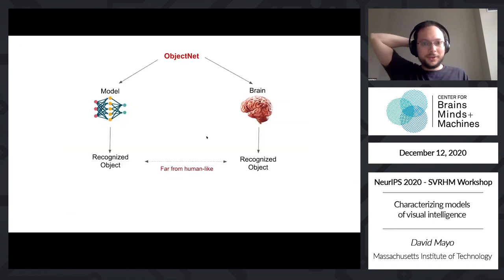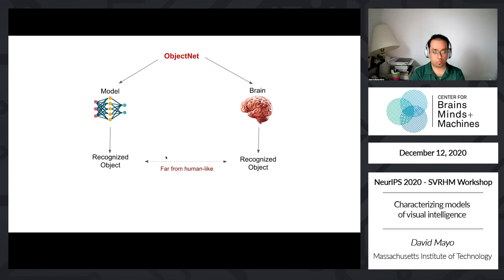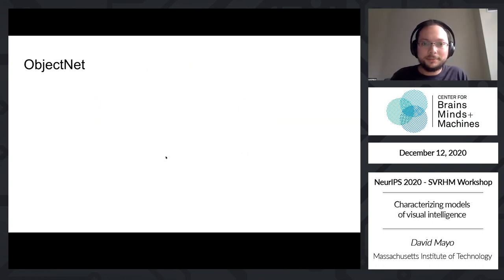To try to address this and quantify this generalization gap, my work has been on building a dataset called ObjectNet. When we use ObjectNet, which is a set of images captured to look much more like the real visual world and to control for specific visual features, we can see that in terms of overall accuracy, there's this large performance gap between what people are able to do and what our machines are currently able to do.